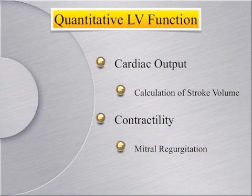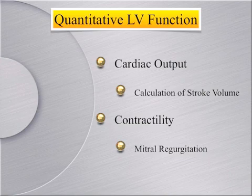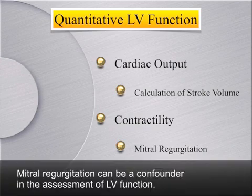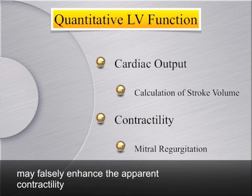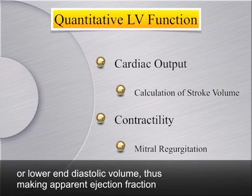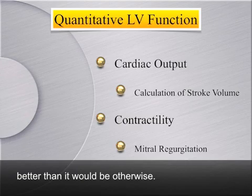Other considerations in quantifying LV function include the analysis of cardiac output by calculating stroke volume and the assessment of contractility, which can be accomplished by examining wall thickening in systole and change from diastole. Mitral regurgitation can be a confounder in the assessment of LV function. Giving the left ventricle a low-pressure place to eject blood may falsely enhance the apparent contractility or lower end diastolic volume, thus making apparent ejection fraction better than it would otherwise be.